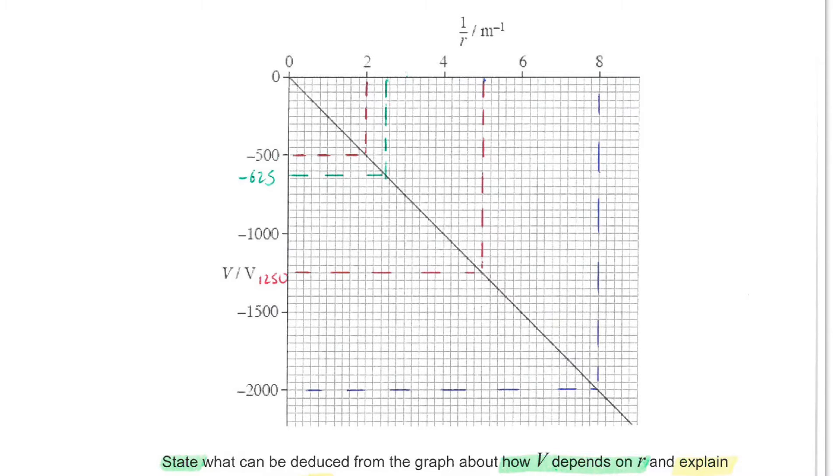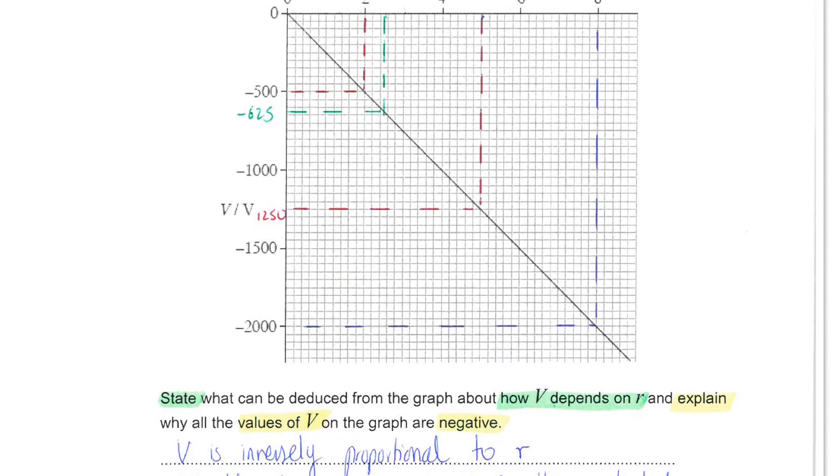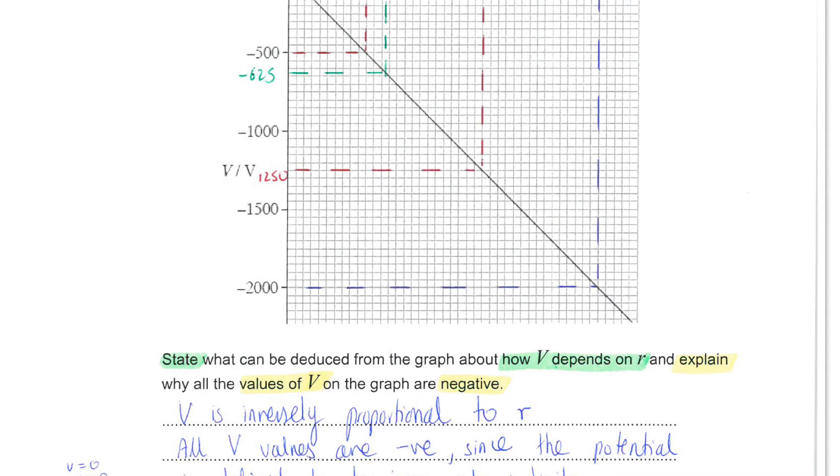However, you are asked to state what can be deduced from the graph about how v depends on r. Note it says how it depends on r, not how it depends on the reciprocal of r. So, the conclusion we can draw from this equation is that v is inversely proportional to r.